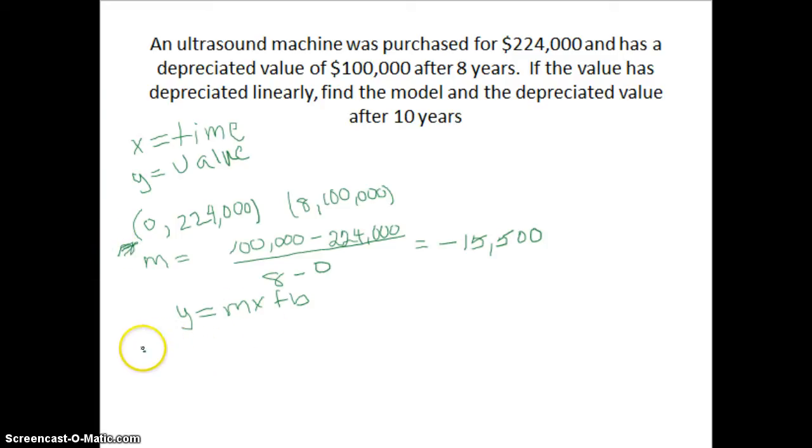So my y value is 224,000 equals m negative 15,500. My x value is 0, which turns out to be super convenient, plus b. Now I know anything times 0 is just 0, so this whole part is 0.